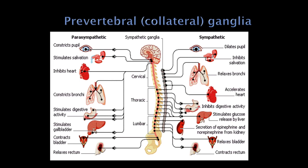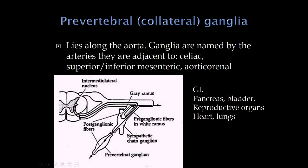Another set of ganglia involved are called prevertebral or collateral ganglia. Notice now the preganglionic fiber actually passes through the paravertebral ganglion to synapse out on these prevertebral ganglia. These lie largely along the aorta, so their ganglia are named by the specific arteries they're adjacent to — for example, the celiac ganglion or superior and inferior mesenteric ganglia. The preganglionic fiber exits, passes through the sympathetic chain ganglia on its way to the prevertebral ganglia where the synapse occurs.